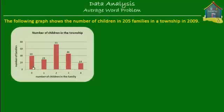Welcome to homecampus.com.sg. Let's solve this word problem on average, which involves a graph. So let's read the problem. It says the following graph shows the number of children in 205 families in a township in 2009.